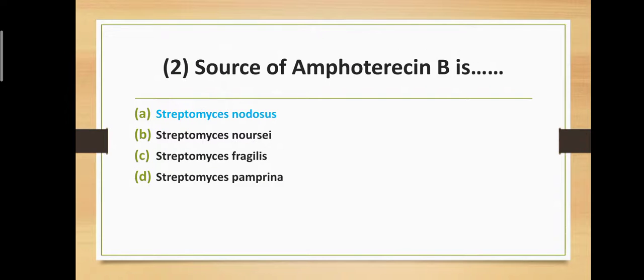Question number two: What is the source of amphotericin B? Option A: Streptomyces nodosus, Option B: Streptomyces norsei, Option C: Streptomyces fragilis, Option D: Streptomyces amphibospiralis. The correct answer is Option A — Streptomyces nodosus.